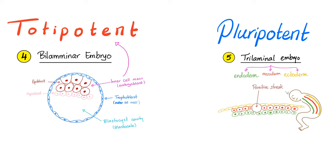How about the trilaminar endoderm, mesoderm, and ectoderm? Well, the endoderm cannot give you just anything — for example, the endoderm cannot give you the nervous system; that's the job of the ectoderm. That's why each one of these germ layers is pluripotent, not totipotent.